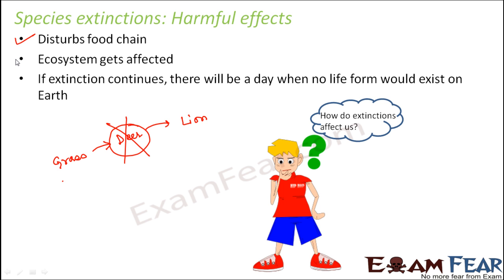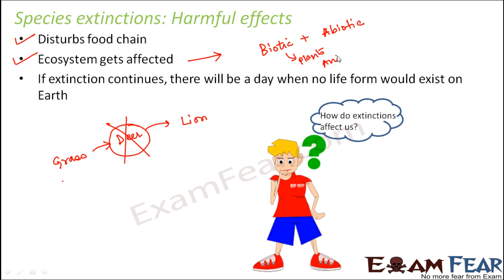The ecosystem also gets affected. When we talk about the ecosystem, we talk about the entire system of plants, animals, microorganisms, soil, water, and air. The ecosystem has biotic components — the living components — and abiotic components, which are the non-living components. Biotic components include plants, animals, and microorganisms.